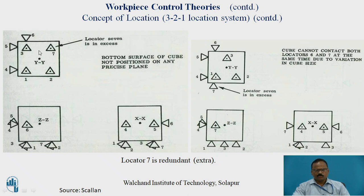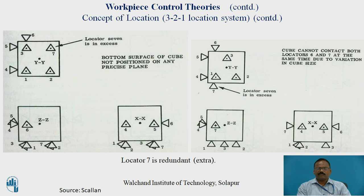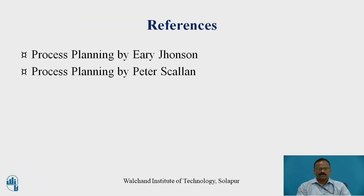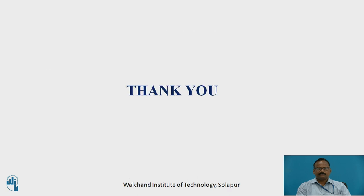A seventh pin is also shown here. As already mentioned, this is called redundant. If we take both a sixth and seventh pin on this plane, it is unnecessary since the sixth pin is already constraining only one degree of freedom. This is the 3-2-1 principle required in process engineering for process planning. Thank you.